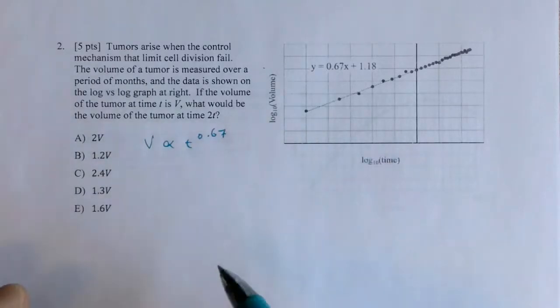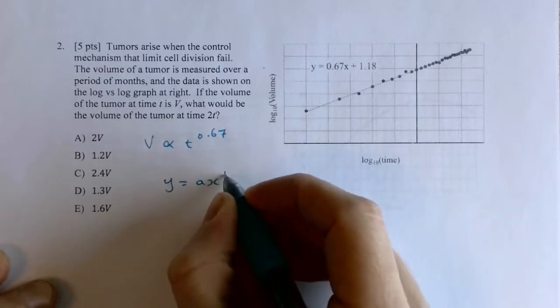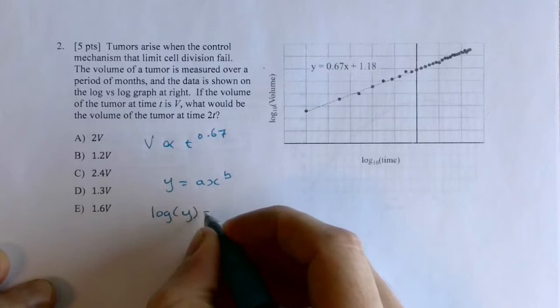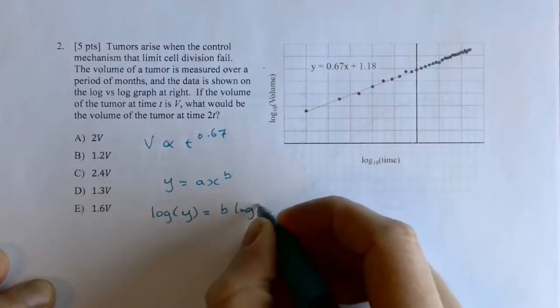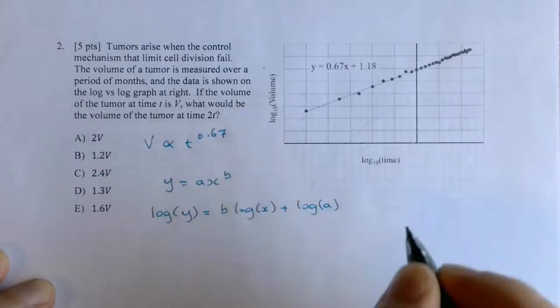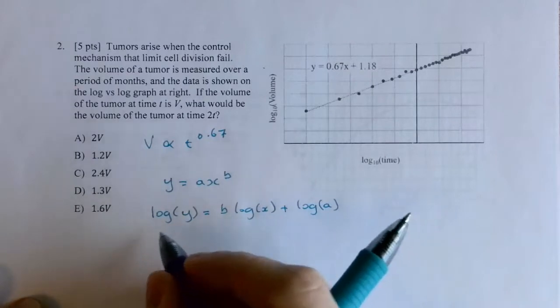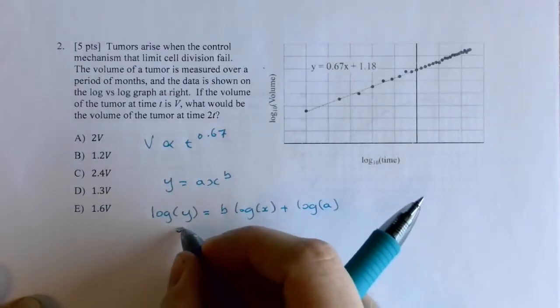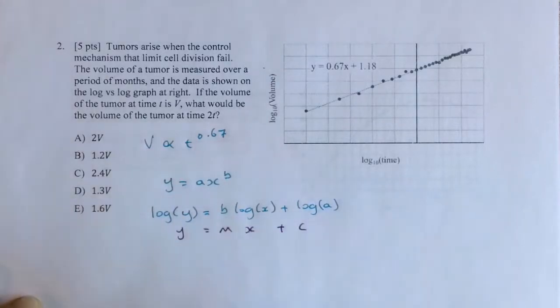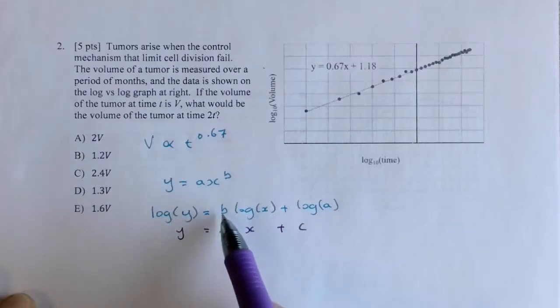So when you have a log-log plot where you take a power function, y equals ax to the b, if you take the log of both sides of this expression, you get the log of y equals b times the log of x plus the log of a, where a is some sort of constant. So when you put this on a linear plot, if you plot the log of y versus the log of x, you get y equals mx plus c, which is why the slope of the log-log plot, this linear plot, is equivalent to the exponent b.